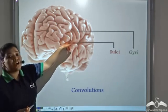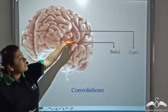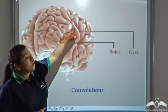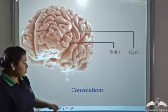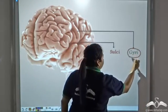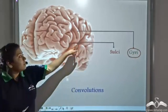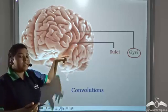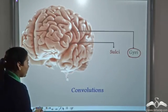Now see the convolutions. This upper raised part of the convolution is known as gyri and the inner ridges is known as the sulci.